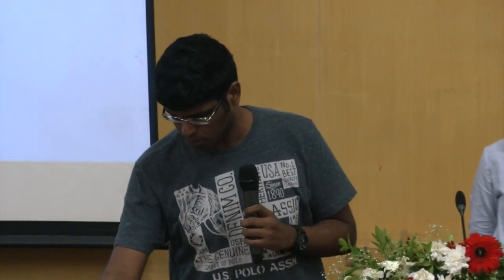After the Luigi tasks are completed, all data is stored in MySQL. To get the data from MySQL to the dashboard, we use a data API based on the Django REST framework. We have written six APIs in total: the four main ones are gender, education, age, and country, plus two helper APIs to list all countries and all locations for each country.